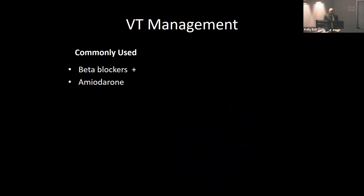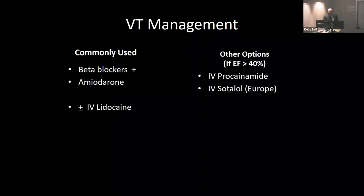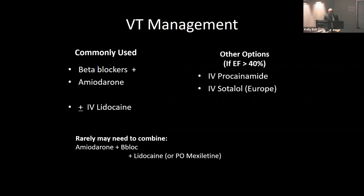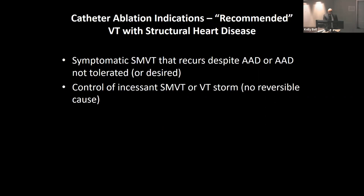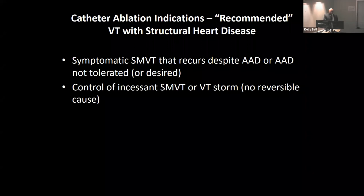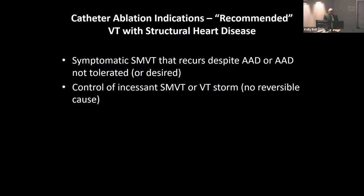To suppress VT, beta blockers are almost ubiquitously used in these patients because they have LV dysfunction. Typically we start on amiodarone as the common path. When they come in with VT storm there are IV options as well. Many end up on a combination of amiodarone plus beta blocker, and if going home maybe mexiletine as well if amiodarone wasn't enough. Catheter ablation in Canadian centers is done fairly conservatively — usually for patients already on antiarrhythmics who are still having VT, can't tolerate antiarrhythmics, or are in VT storm we can't settle.